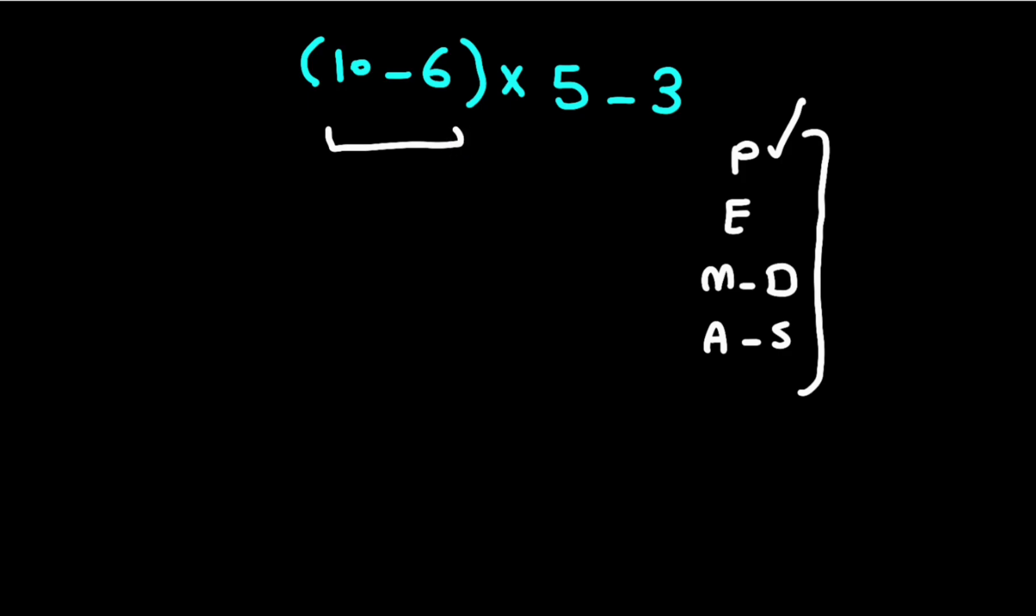Now in the first step, we have one parentheses that we have to solve first, not this multiplication and this subtraction. If we do this multiplication and this subtraction first, it is wrong. Now we have to start with this parentheses: 10 minus 6 equals 4.